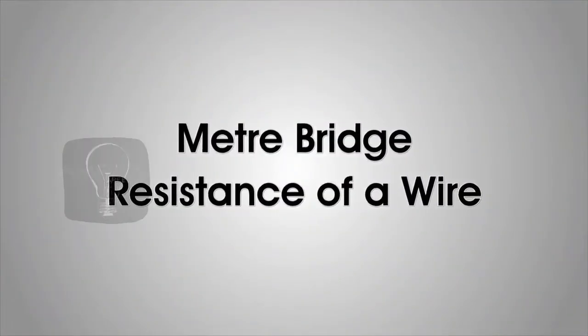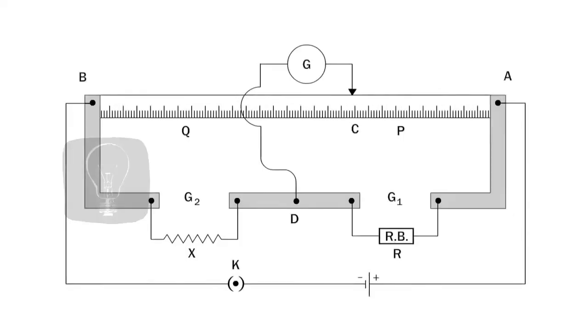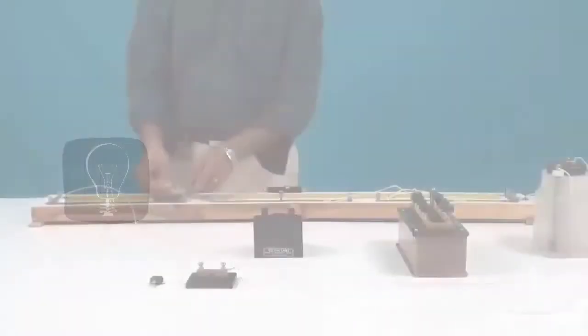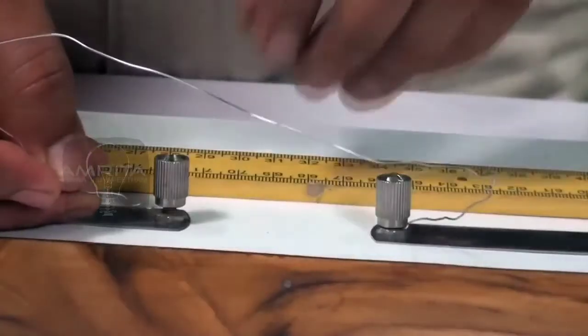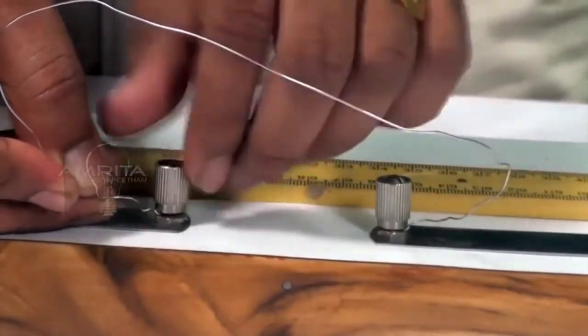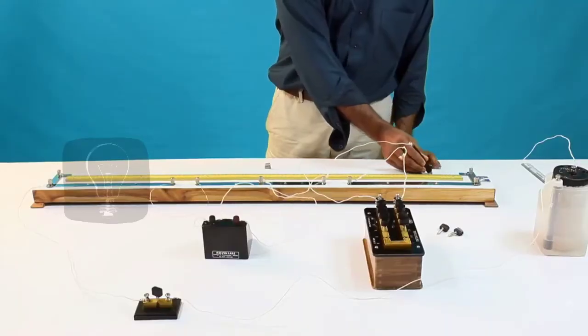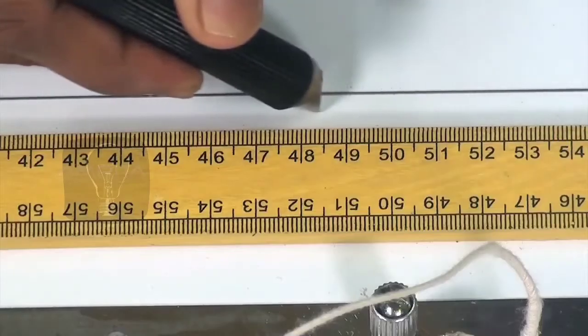Metre Bridge Resistance of a Wire. The property of a conductor to oppose the flow of charges through it is called its resistance. In this experiment our aim is to find the resistance of a given wire using a meter bridge and hence determine the specific resistance of its materials.